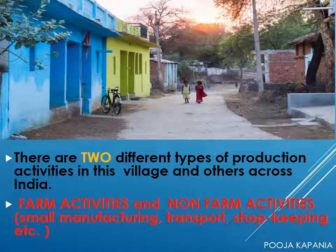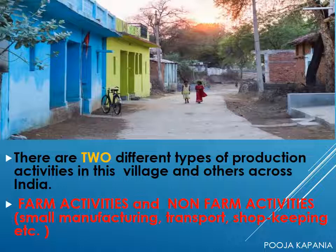The story of Palampur, an imaginary village, will take us through the different types of production activities in the village. In India, farming is the major production activity in villages across the whole country. The other production activities, referred to as non-farm activities, include small manufacturing, transport, shopkeeping etc. We shall take a look at both these types of activities after learning a few general things about production.